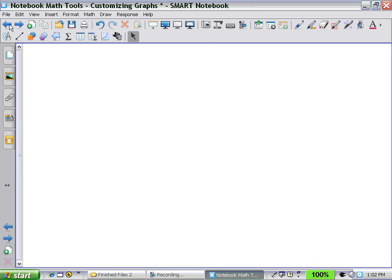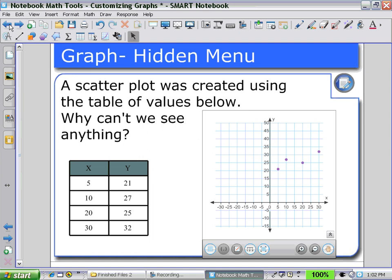So going back to my previous graph, I can now see the five other icons on the hidden menu. The one on the left allows me to remove my grid lines or put them in. The second icon from the left allows me to label my points.